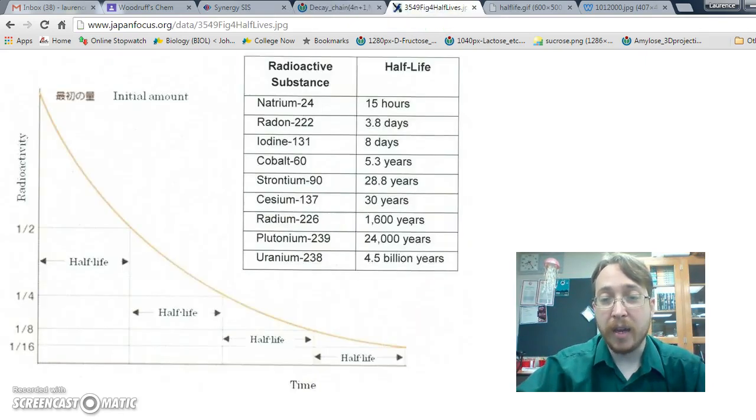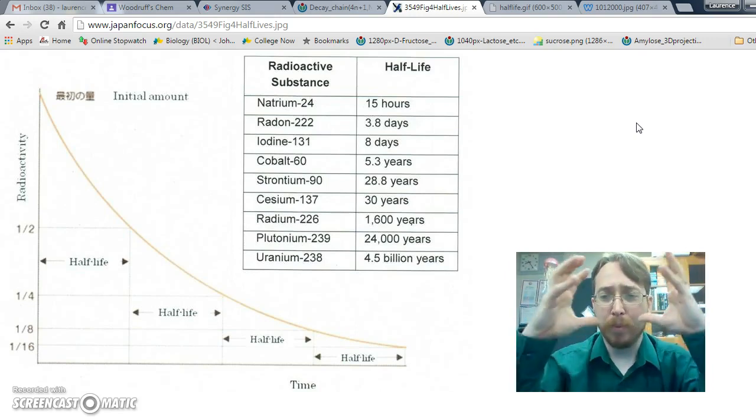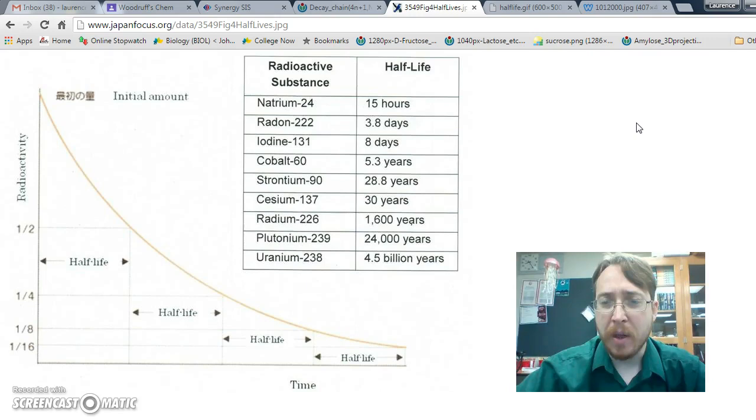Now we're going to take a look at half-life. Those decay chains show us what's happening to particular atoms that are going through this process. But we don't find one atom out there. We find big blocks of substances—billions or trillions of atoms all together into like one solid rock of something. Well, how do we describe what happens to that rock of billions or trillions of atoms over time? That's half-life. Half-life is the amount of time it takes for half of a radioactive substance to decay.